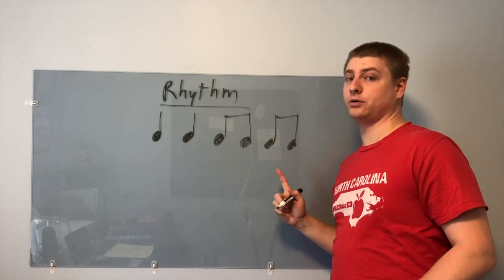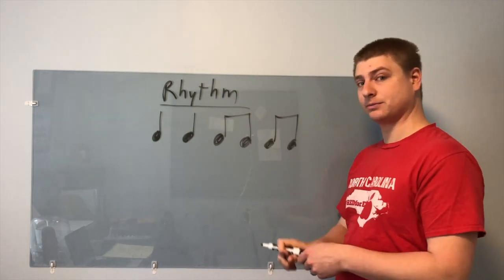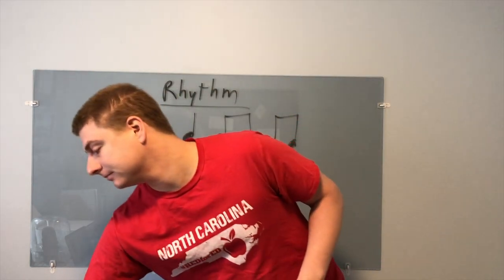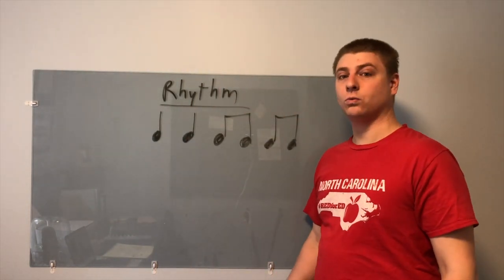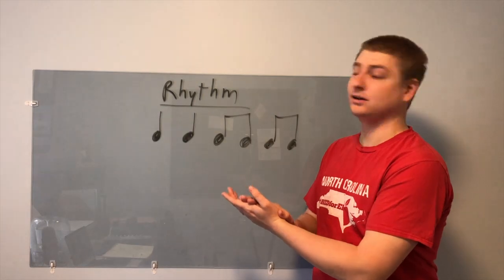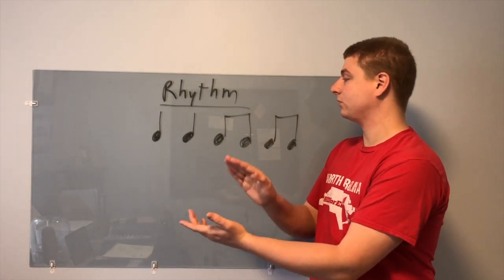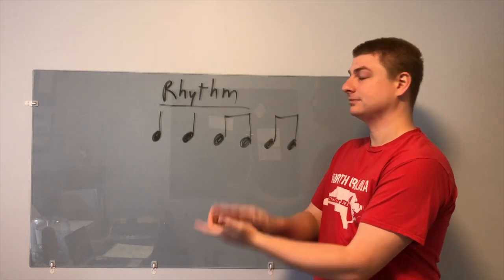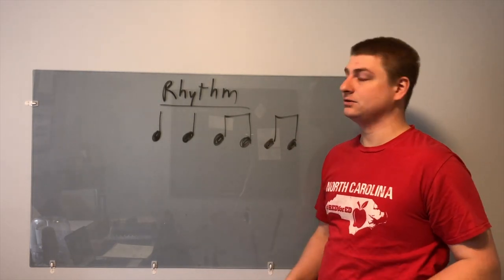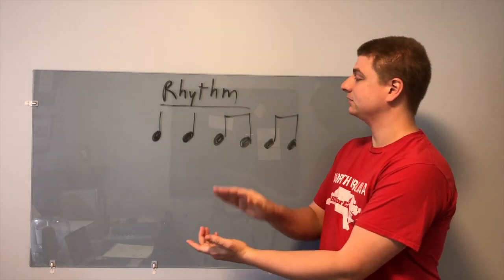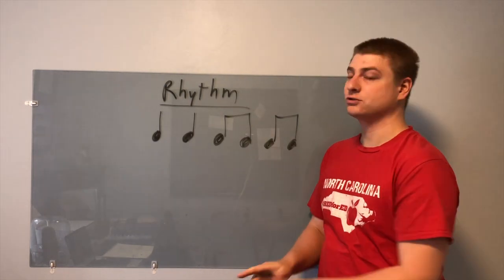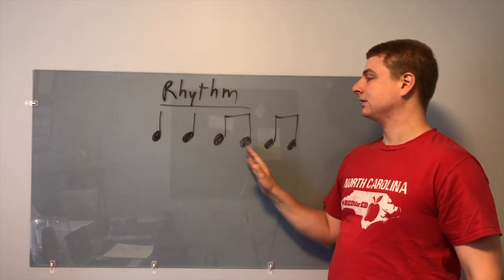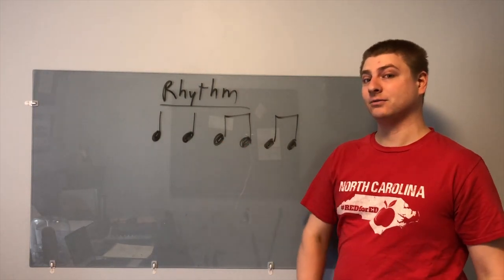Here's a rhythm on the board. We're going to repeat this rhythm a couple times. I want you to clap this with me. One, two, here we go. Try again, ready, go. One, two, again, and go. Try it by yourself. Ready, go. One more time. Ready, go.